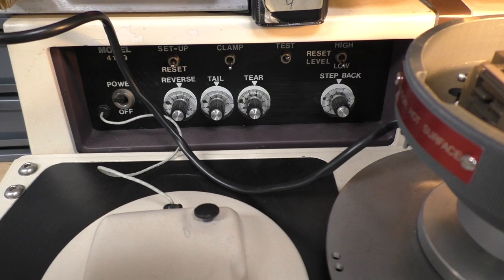The settings definitely take quite some time to get right. On the left here we have settings for reverse, tail, and tear, and these are for after it makes the second bond. The tail is how much wire it will leave sticking out of the wedge tool to make the next bond, and if that's too short your bonds will fail.